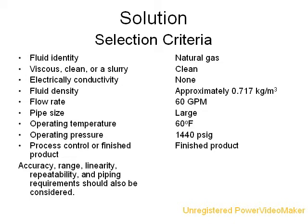Looking to the sample problem, we can determine that the fluid identity is natural gas, it is clean, and it is not electrically conductive. The fluid density is approximately 0.717 kilograms per meter cubed. The flow rate is 60 gallons per minute, the pipe size is large, and the operating temperature is 60 degrees Fahrenheit. The maximum operating pressure is 1440 psi gauge, and we are dealing with the finished product.